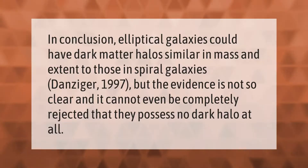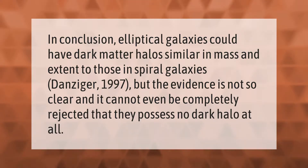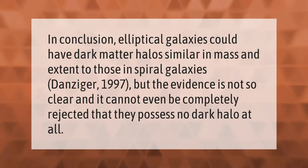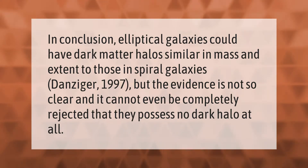In conclusion, elliptical galaxies could have dark matter halos similar in mass and extent to those in spiral galaxies (Danziger, 1997), but the evidence is not so clear, and it cannot even be completely rejected that they possess no dark halo at all.